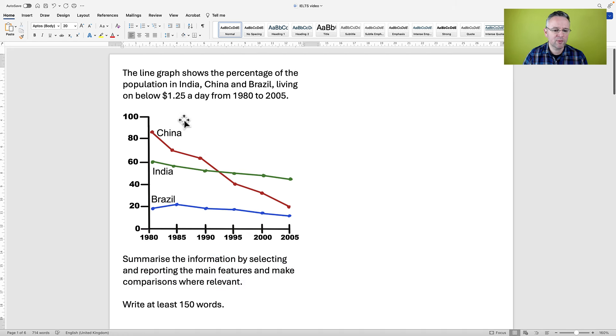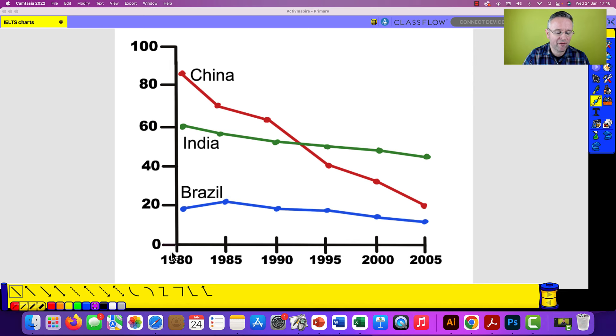So first of all, we need to make sure that we understand this line graph and what it is in fact showing us. Across the bottom, we have years. The interval is five years. We have 1980, 1985, 1990. So that's a 25 year period. And then up the side, we have the percentage and it is going up in 20s: 20, 40, 60, 80 and 100.